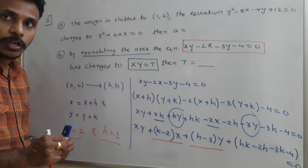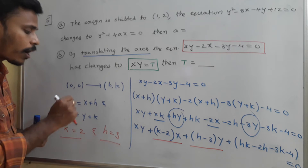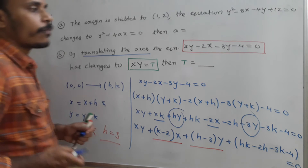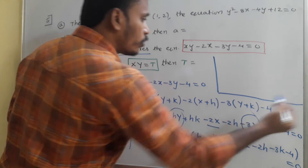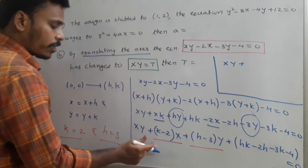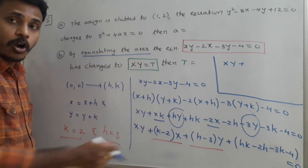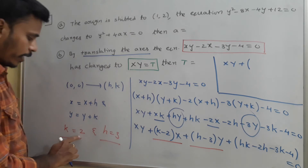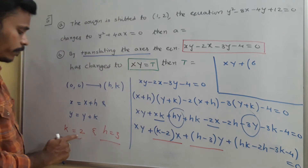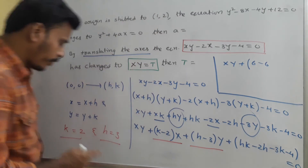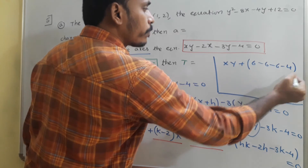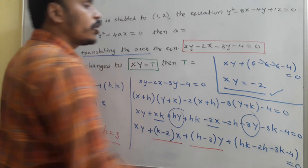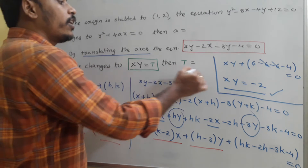With k equals 2 and h equals 3, the X and Y terms are eliminated. The constant term becomes: hk minus 2h minus 3k minus 4, which is 2 times 3 minus 2 times 3 minus 3 times 2 minus 4, giving 6 minus 6 minus 6 minus 4 equals 0. So 6 and 6 cancel, leaving minus 6 minus 4, giving XY equals minus 2. So the new equation is XY equals minus 2 and the value of t equals minus 2.